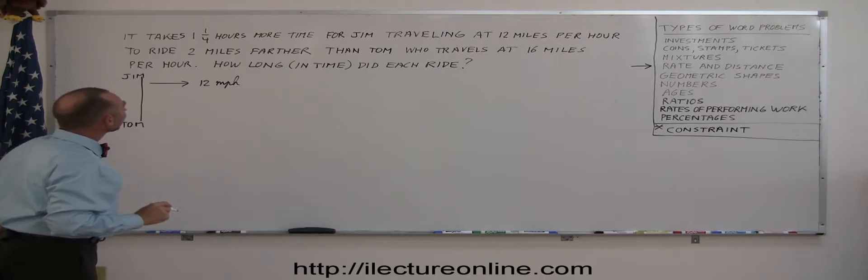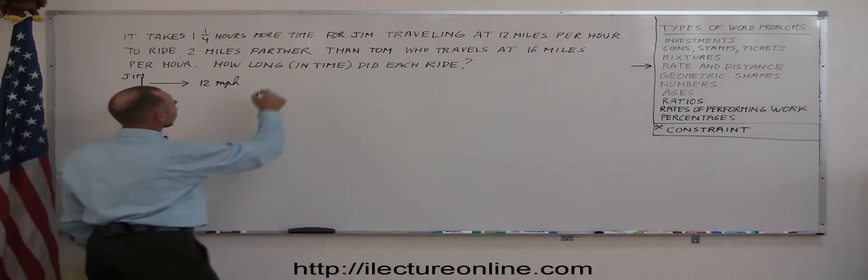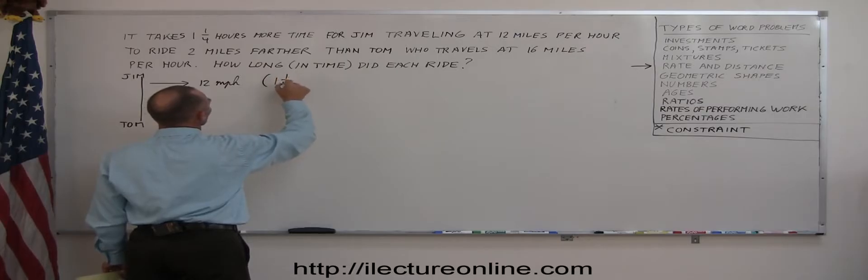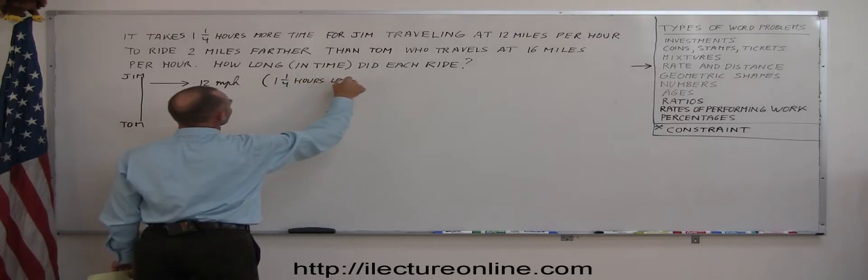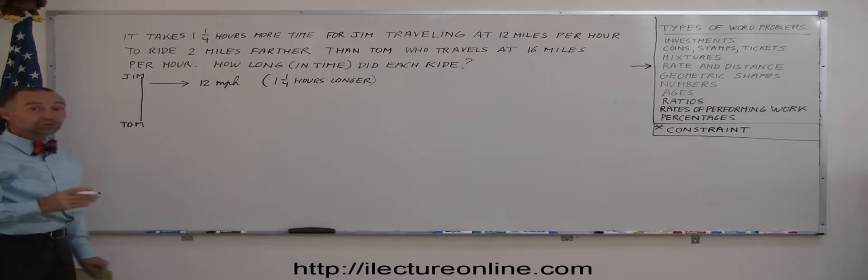It says it takes one and a quarter hours more time for Jim traveling at 12 miles per hour to ride two miles farther than Tom who travels at 16 miles per hour. Wow, I'm already confused. How long in time did each ride?